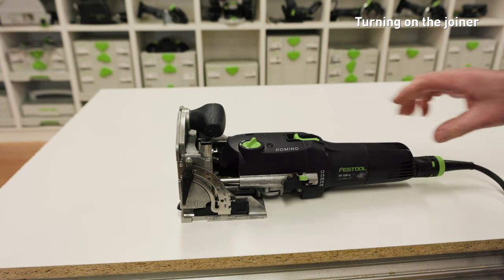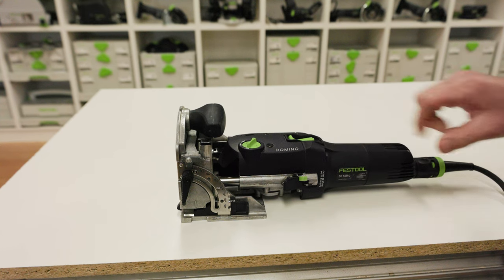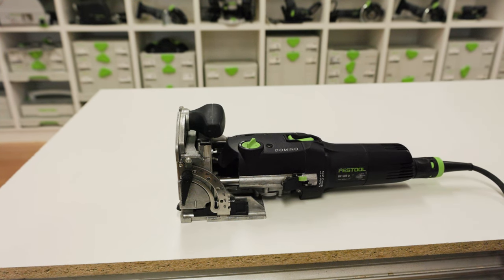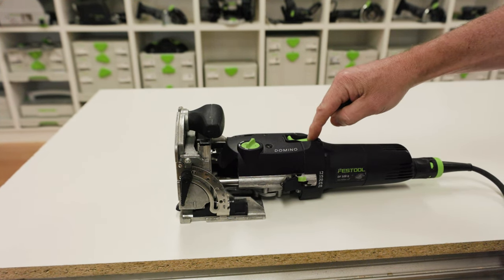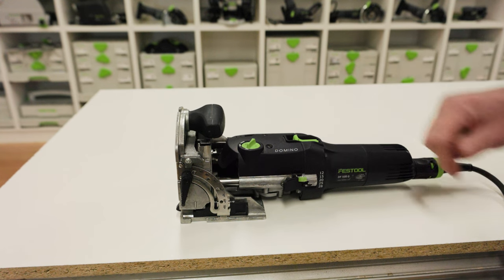The power switch for the Domino Joiner locks into the on position when activated. To turn the joiner off, press down on the back of the power switch to release the latch.